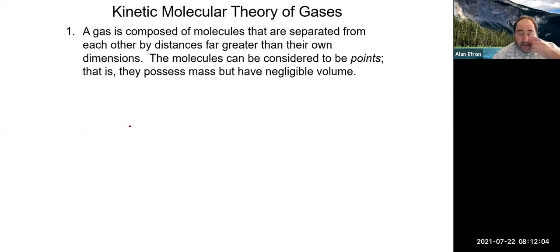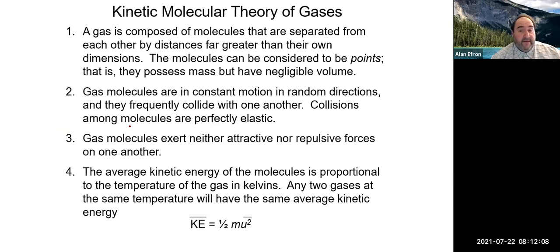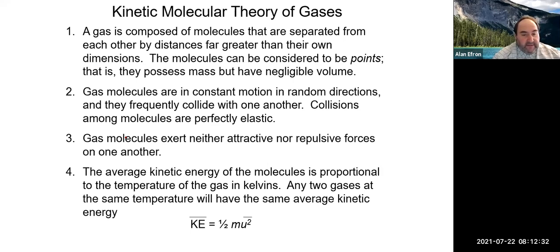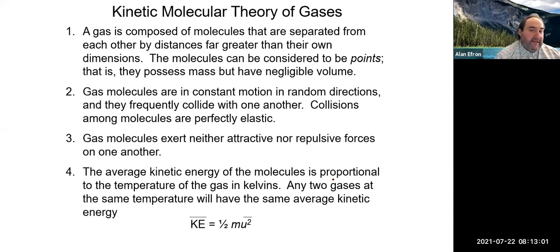Now we move to the kinetic molecular theory of gases, which describes what's happening at the molecular level and defines what makes something an ideal gas. The first point is that a gas is composed of very small molecules separated from each other by distances greater than their own dimensions. Because of this, gas molecules are considered to have negligible volume.